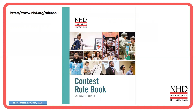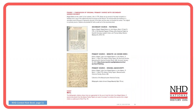When I read my NHD Contest Rulebook, I can see on page 11 the distinction. If a student finds a primary source inside of a secondary source, that's okay. But the key is that they cite that source as a secondary source — the book that it came out of. In that student's annotation, it's totally okay to explain that in this book, they found a letter, a photograph, or other potential primary sources.